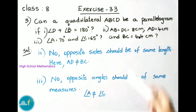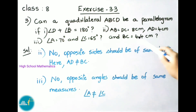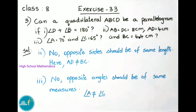For part (ii): AB equals DC equals 8 cm, AD equals 4 cm, and BC equals 4.4 cm. Here, opposite sides AD and BC are not equal. Since opposite sides must be of equal length and these are of different lengths, it cannot form a parallelogram.